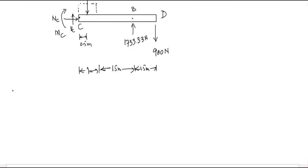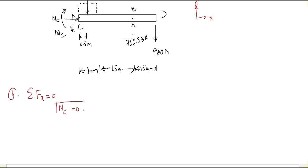Applying the first condition of equilibrium — summation of all forces in the x-direction equals zero. Taking the x and y directions, the only force in the x-direction is Nc. Taking rightward as positive, Nc is positive, and there are no other forces in that direction. Therefore Nc equals zero, meaning the normal force at the cross-section at point C is zero.